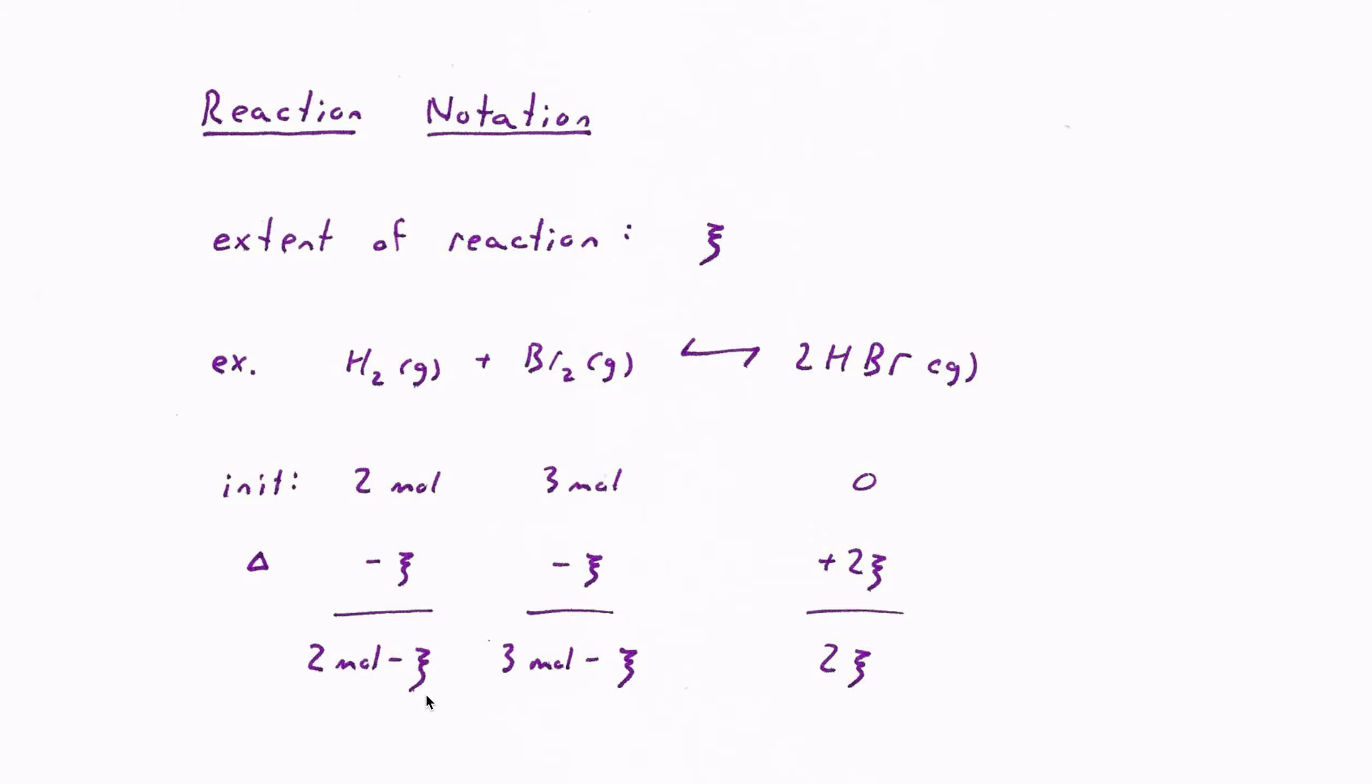then the total amount of H2 left after the reaction has preceded by this amount is two moles minus squiggle for H2, three moles minus that much for Br2. But because of the stoichiometry of the reaction, we have a total of two squiggle moles of HBr.